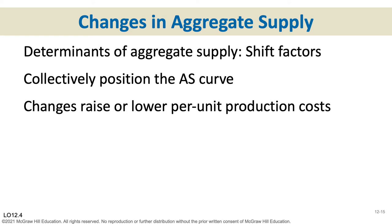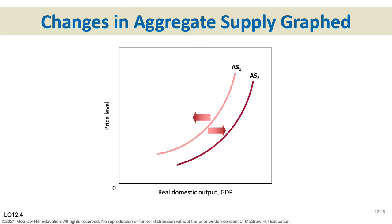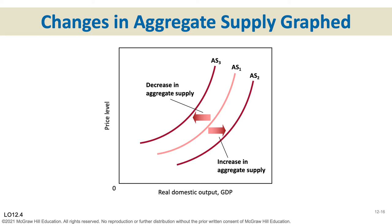We'll also talk about changes in productivity. Looking at the supply curves: if AS1 experiences something positive from the producer's perspective — overarching across the production of every good and service in the economy — that causes an increase in aggregate supply, shifting it right. If something happens that negatively affects producers, they decrease total aggregate supply, shifting the curve left.